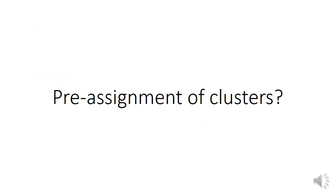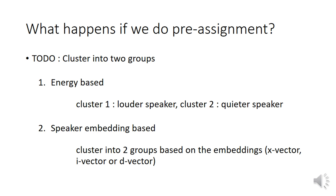Here comes another question: can we do the pre-assignment of the cluster before training, and then fix this assignment for all training epochs? What would happen if we pre-assign the ground truth in the mixture and fix this assignment during training instead of using PIT? We propose clustering all the ground truth in the training data into two groups. The first method is energy-based: we assign the louder ground truth in the mixture to cluster 1, matching output channel 1, and the quieter one to cluster 2, matching output channel 2.